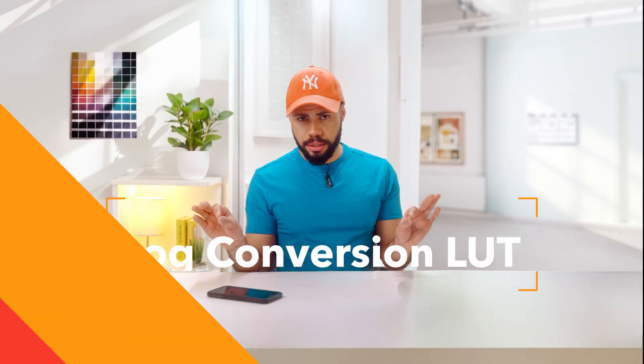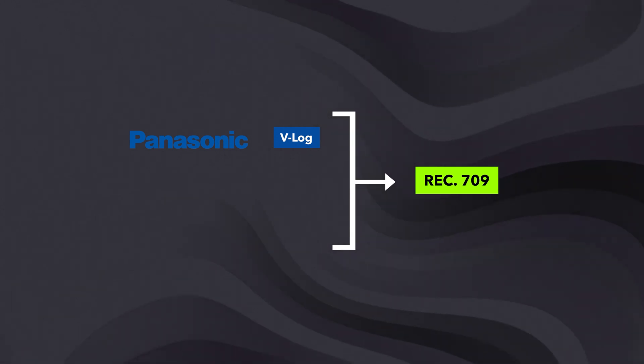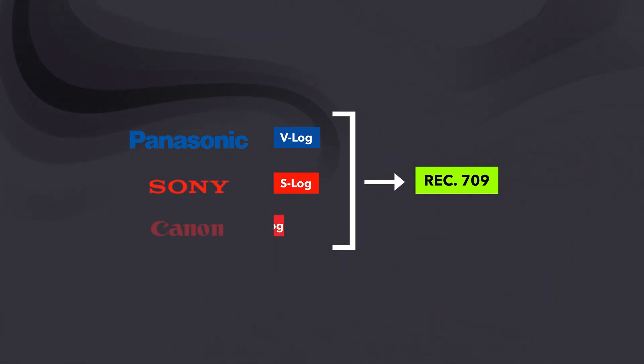That helps your software convert each color from boring to BAM. This lookup table is called a log conversion LUT — V-log to REC 709, S-log to REC 709, C-log — these are from different cameras. What is REC 709? It's the name of the color space that we see images on TV, computer screens, and phones. REC is short for recommendation and 709 is the 709th recommendation in the list of broadcast guidelines — so it's basically just a generic name.